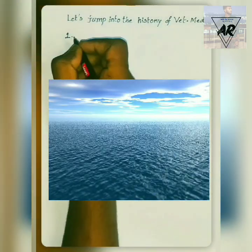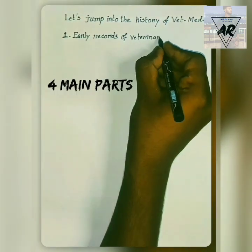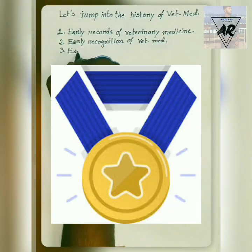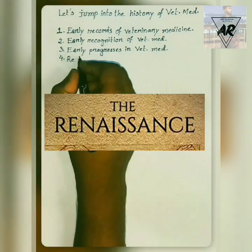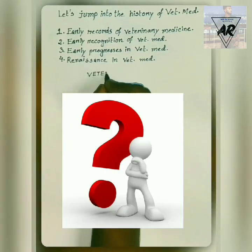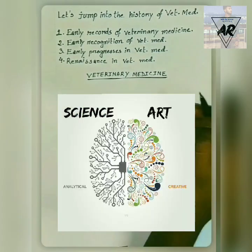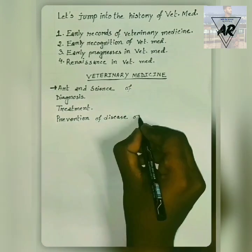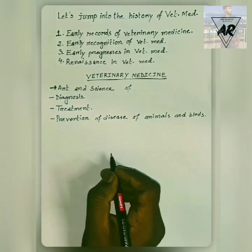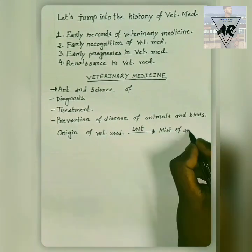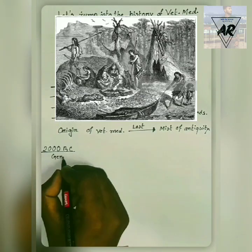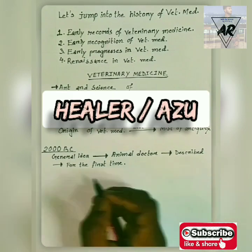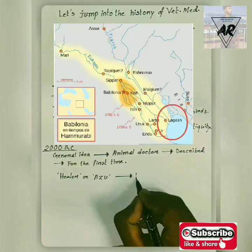To make the history more understandable, we can break it down into four main parts: early records of veterinary medicine, the early recognition period, the early progress period, and the renaissance of veterinary medicine. Veterinary medicine is the art and science of diagnosis, treatment, prevention, and control of diseases of animals and birds. We can start from 2000 BC, when the general idea of an animal doctor seems to have been described for the first time as a healer or 'arzu' of hearts of ruminant animals during the Sumerian king Earning Arzu of Lagash.